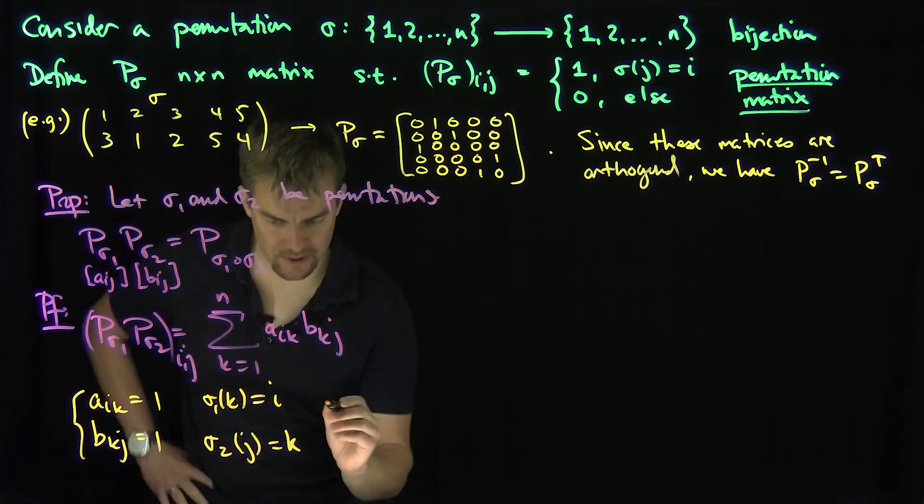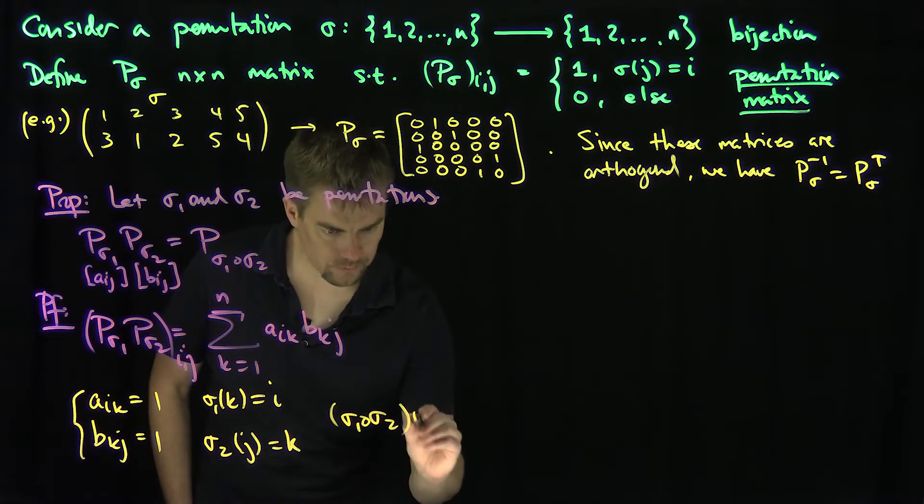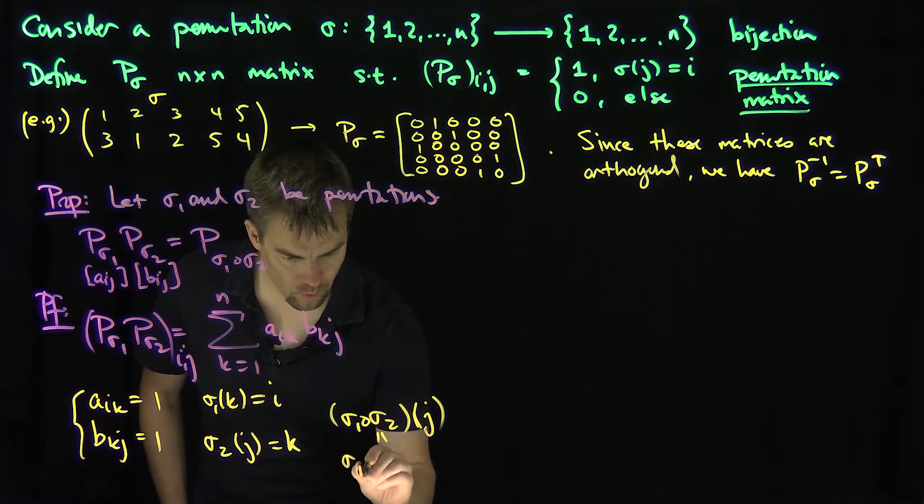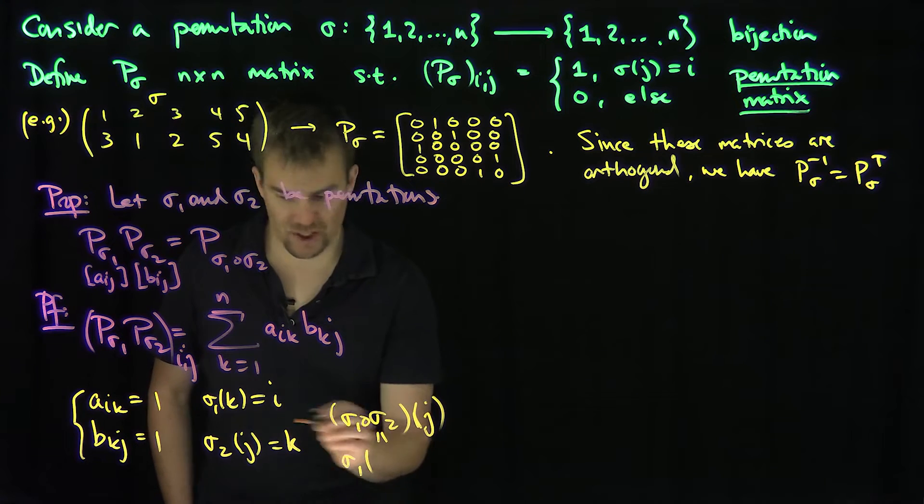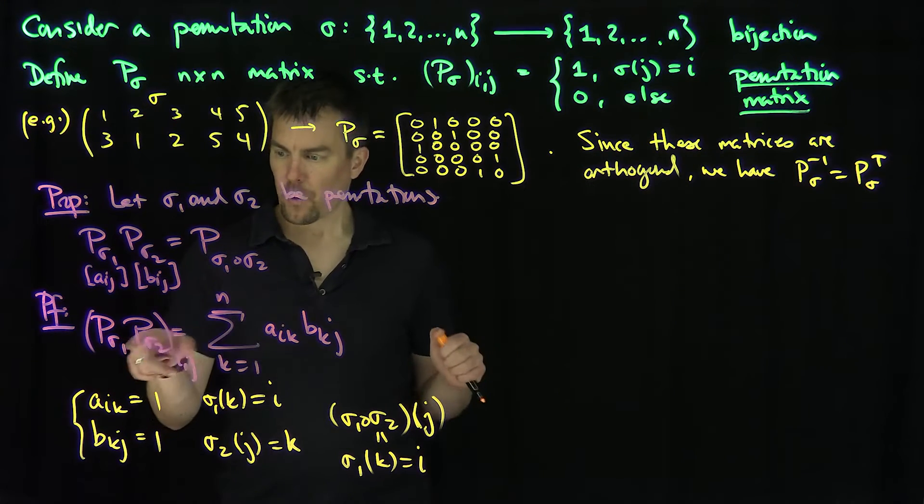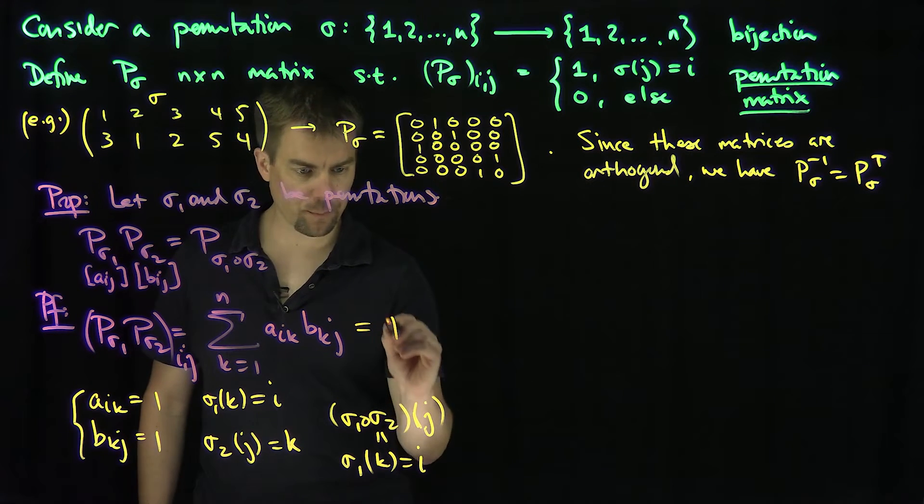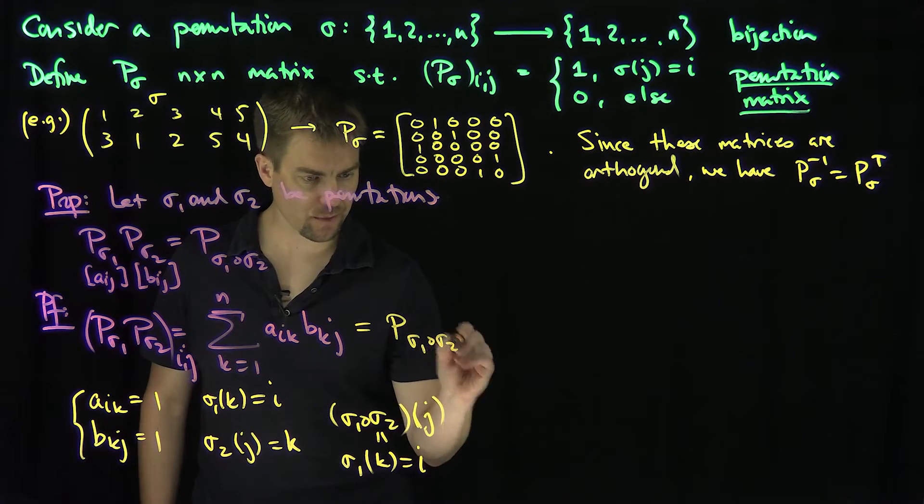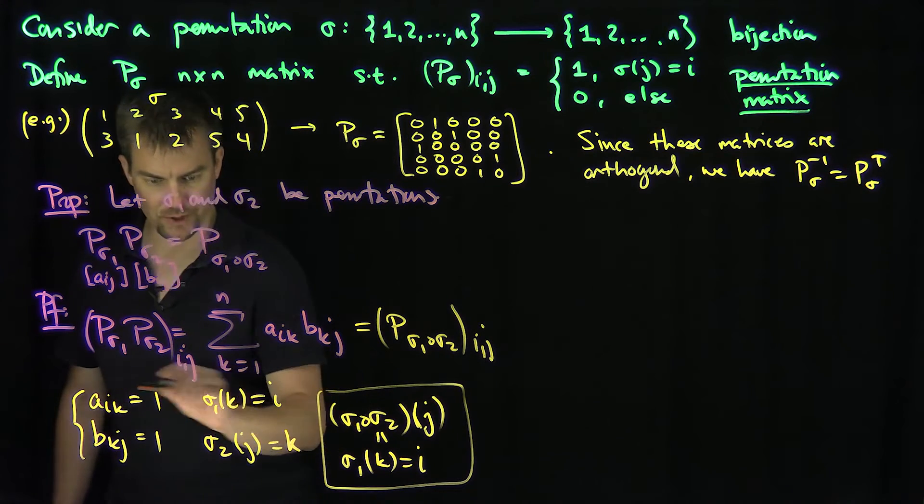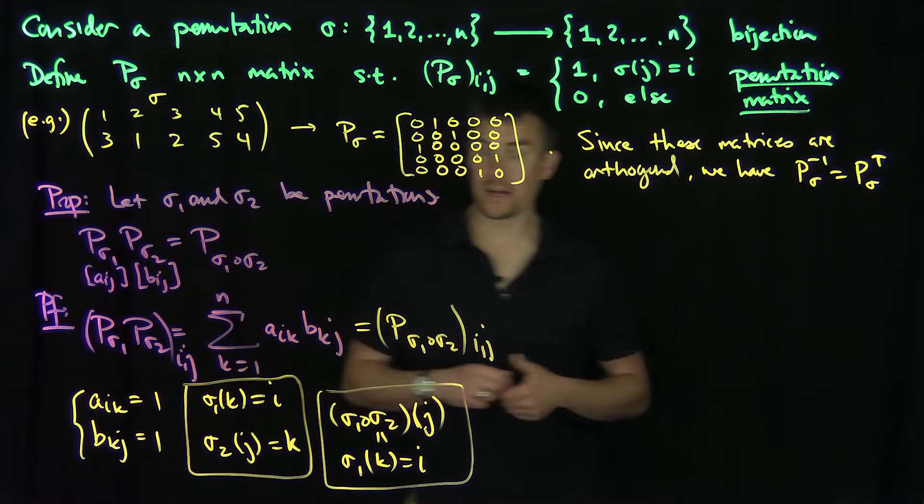So now look at the composition of these things. Let's look at sigma_1 composed with sigma_2. What do we need? What happens if I plug in j to sigma_1 sigma_2? That will be sigma_1 of sigma_2 of j is equal to K, and sigma_1 of K is equal to i. So in other words, this thing is equal to 1 if and only if we have sigma_1 and sigma_2. So we see that these coefficients are exactly equal to the matrix coefficients for P_sigma_1 composed sigma_2 i,j by this relationship.